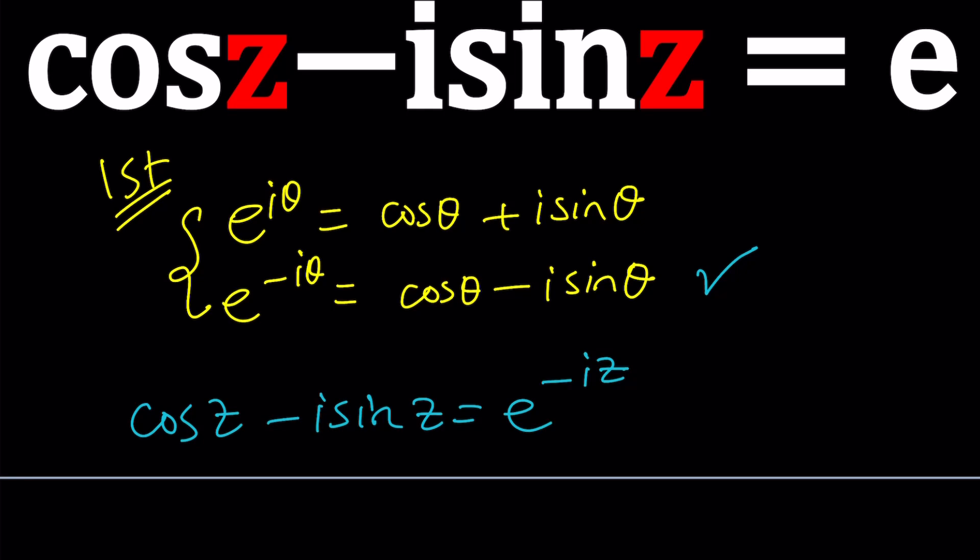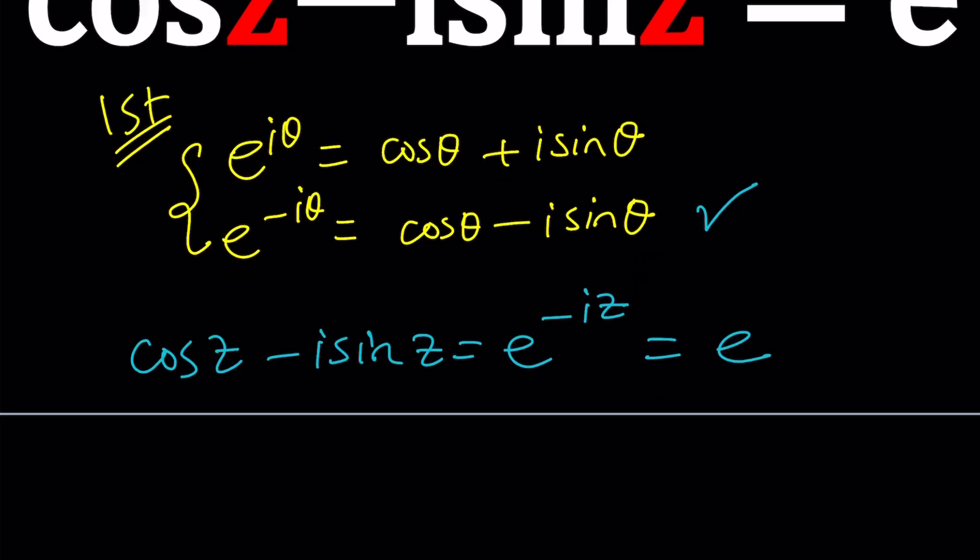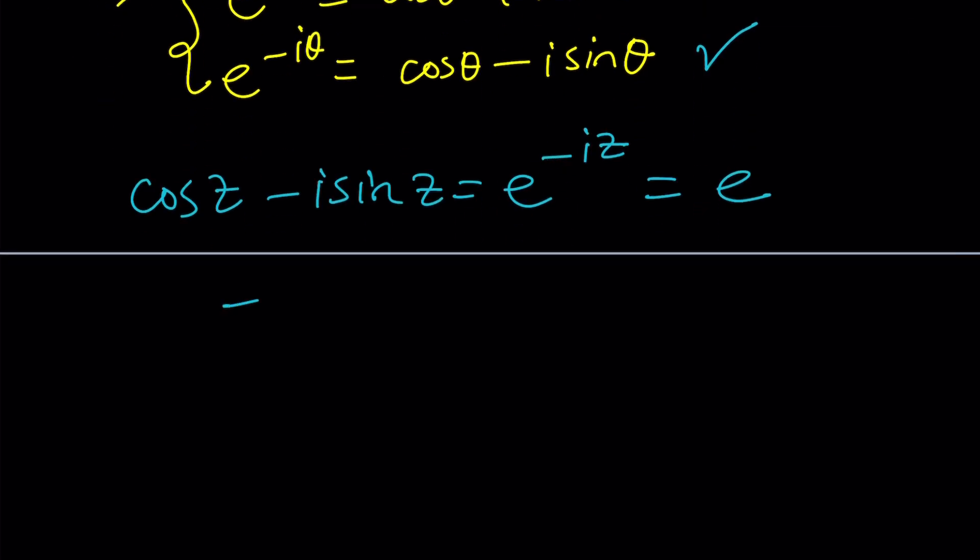But we also know that this is equal to e. So now we get negative i z equals one because this is e to the first power, and divide both sides by negative i or multiply both sides by i. You're going to get z equals i. Case closed, that's it. We can go home. No. Even though this is one of the solutions, this is not the whole story. There's definitely more to it than just this one.